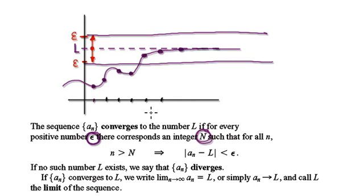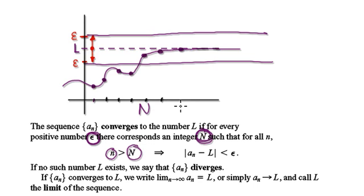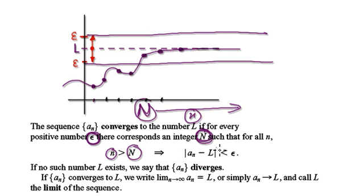For any given tolerance that you give me, there must exist an integer, capital N. Capital N could be anywhere along here, but there must be a capital N such that for all small n above capital N — so any small n beyond capital N — if you look at the difference of the two, it must be less than epsilon.